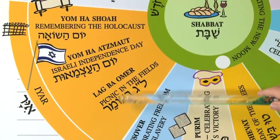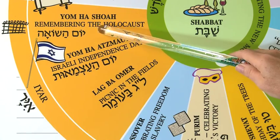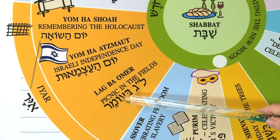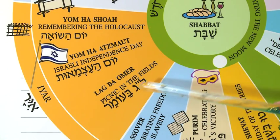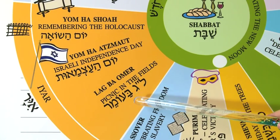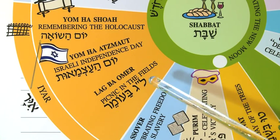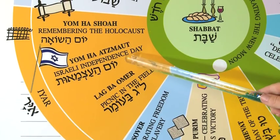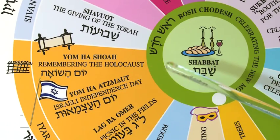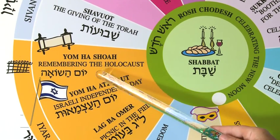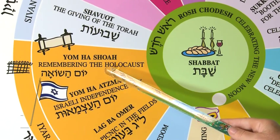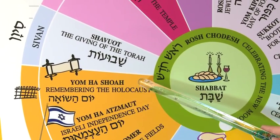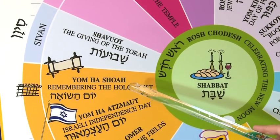In the yellow over here, we have Lag B'Omer, and Yom Ha'atzmaut, and Yom HaShoah, all falling in the month of Iyar. Lag B'Omer is a holiday falling within the 49 days of the Omer — a time that we can play in the fields and recognize our sense of freedom. Yom Ha'atzmaut, of course, is Israel's Independence Day; Israel became a state in 1948. And then we have Yom HaShoah, remembering the Holocaust that occurred in 1939 to 1945, killing 6 million Jews and close to 10 million people of all kinds. It is a terrible, terrible day to remember — the catastrophe surrounding World War II and the Holocaust.